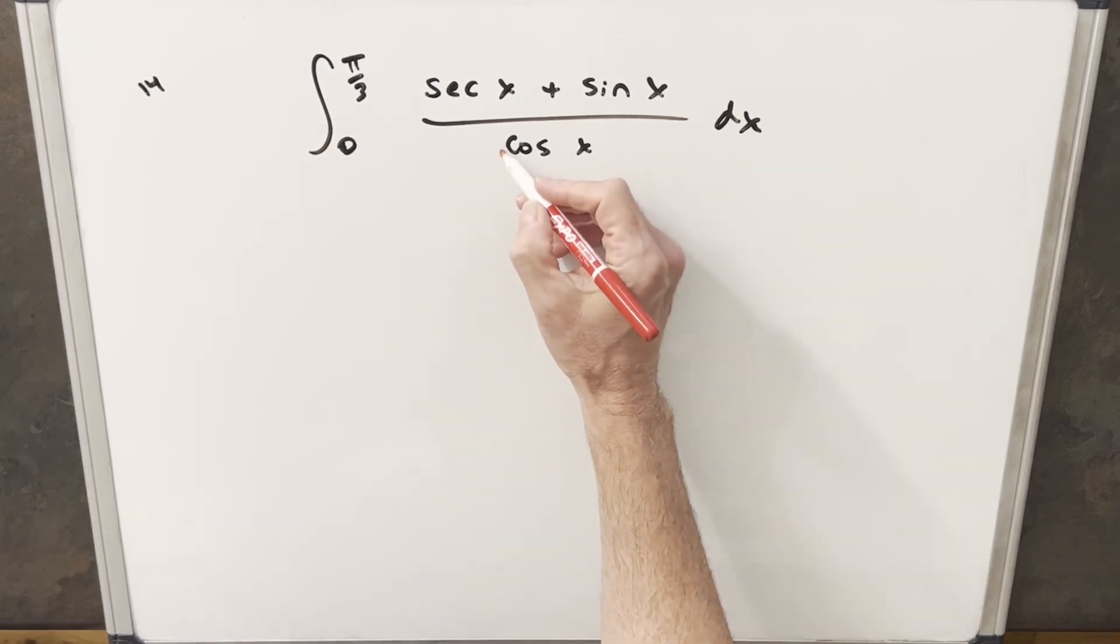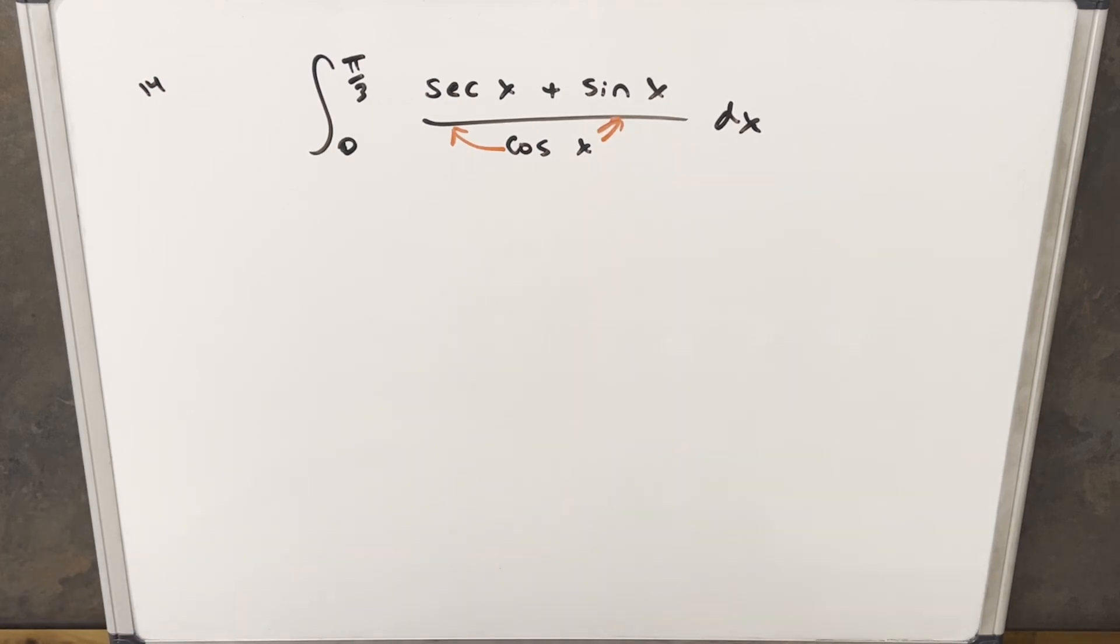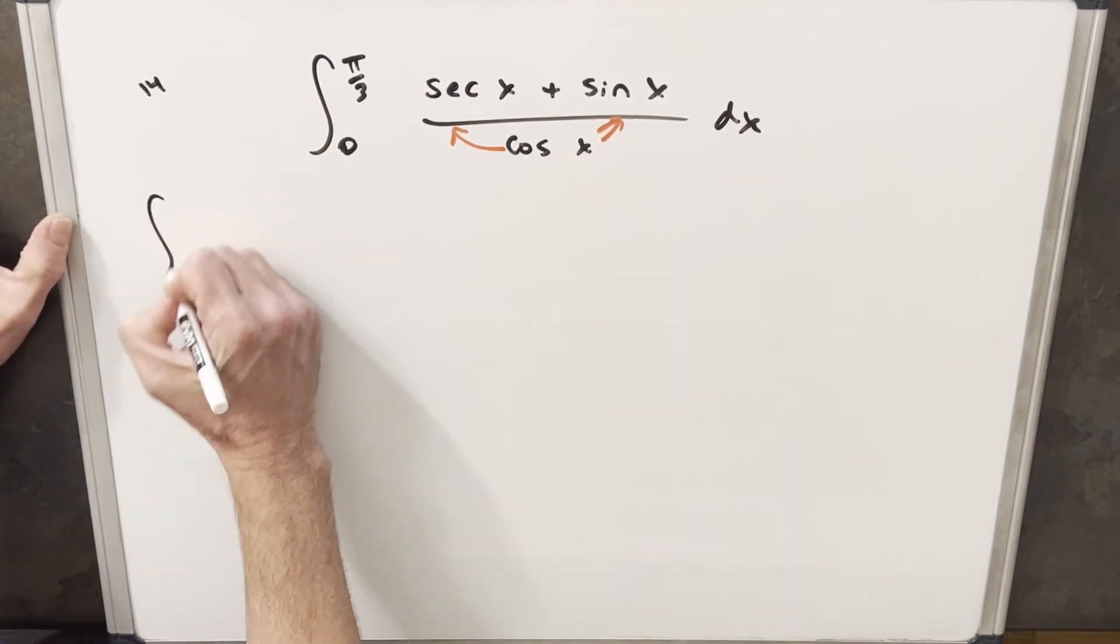What I'm going to do is just split this into two integrals and divide cos x into each term. So let's see what we have when we do that.